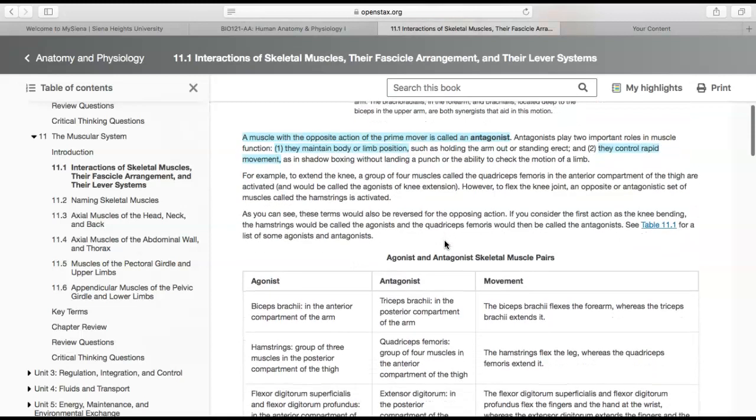A muscle that has the opposite action of the prime mover is called an antagonist. If you think about a superhero movie, the superheroes have one goal and the evil person has another—the evil person is called the antagonist. There's nothing evil about what muscles are doing, but when a muscle moves one way and another muscle does the exact opposite movement, we call that muscle the antagonist.